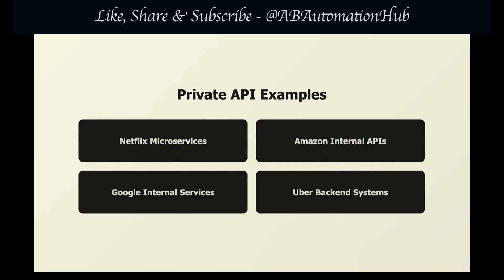Google Search also does not work alone. When you search on google.com, it may call Google Ads for sponsored results, Google Maps for location data, and YouTube for video results — all through private APIs. Similarly, the Uber backend system uses many internal APIs. So while public APIs are open to everyone, private APIs are locked to internal teams.